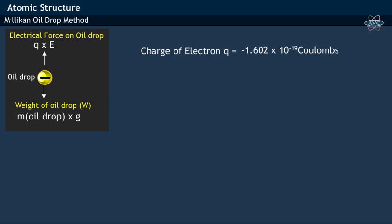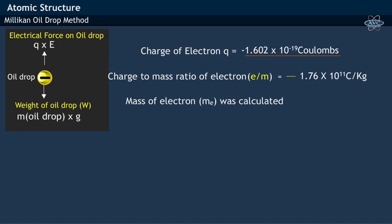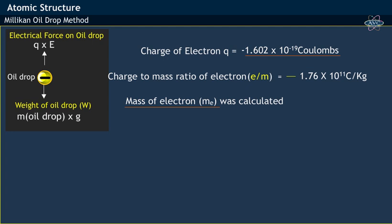Using the charge of electron value of −1.602 × 10⁻¹⁹ coulombs, and J.J. Thomson's charge to mass ratio of electron, that is e/m value of 1.76 × 10¹¹ coulombs per kg, Millikan has calculated the mass of electron.